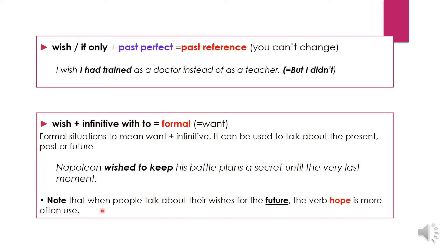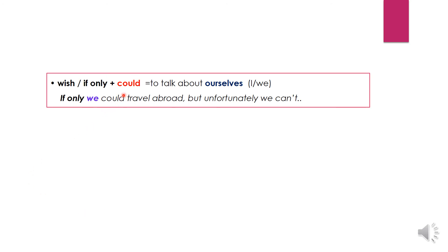Note that when people want to talk about their wishes for the future, the verb 'hope' is more often used. After wish or if only, it's possible to use 'could' to talk about ourselves. 'If only we could travel abroad, but unfortunately we can't.' In this sentence you cannot use 'would' — you only use 'would' to refer to someone else, not to talk about yourself.